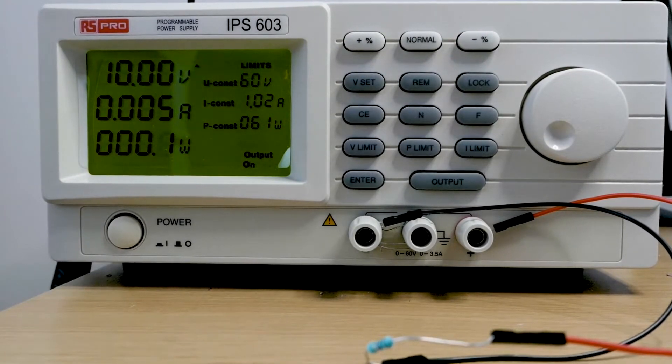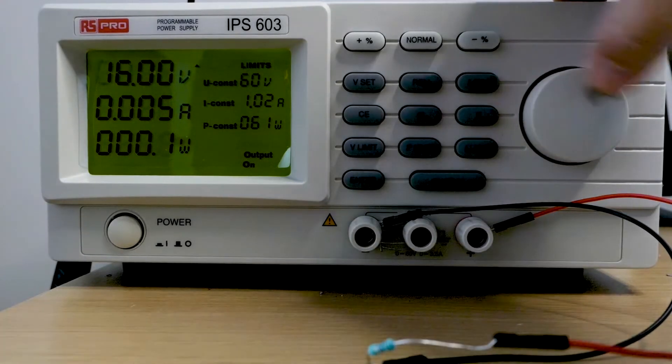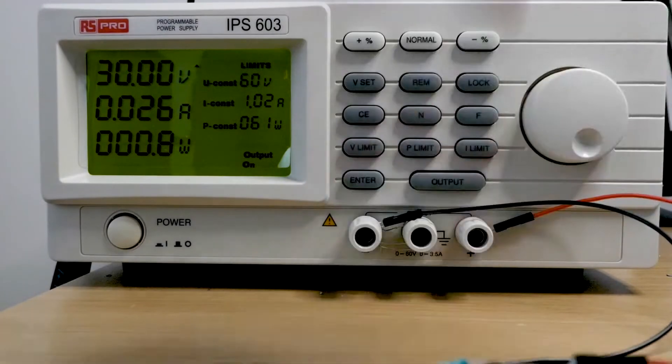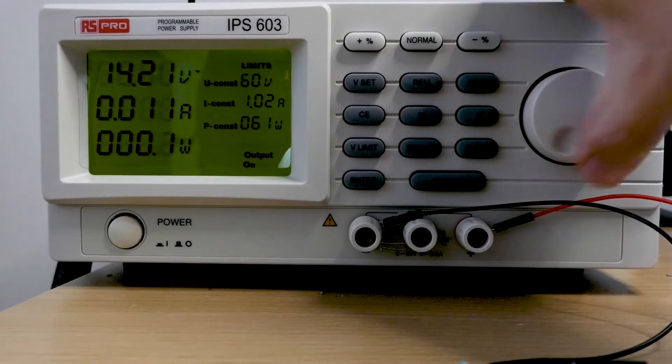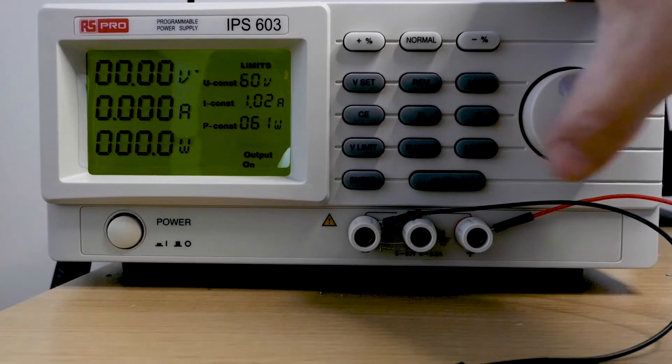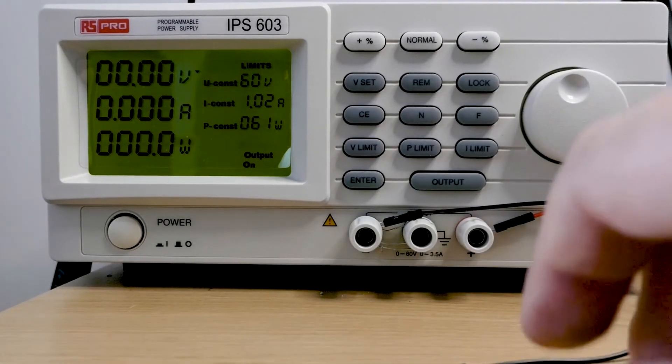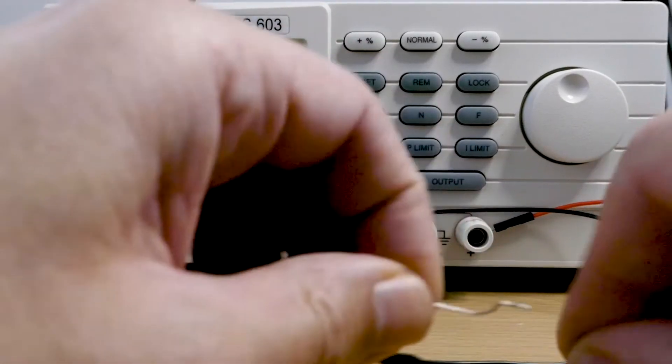That in essence is how it works. As we increase voltage, obviously current is going to increase and that resistor is going to get hotter. It's already probably too hot to touch, so it's dissipating a lot of power.